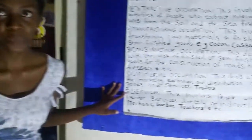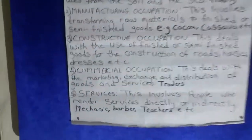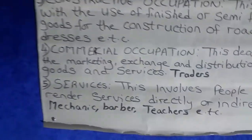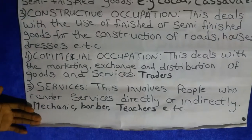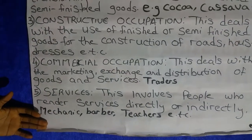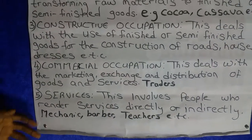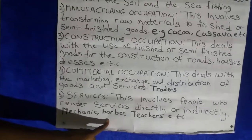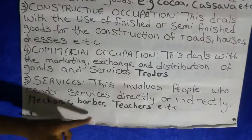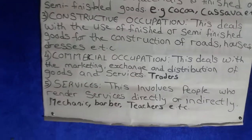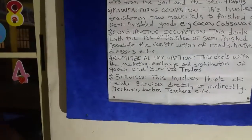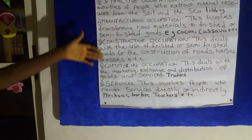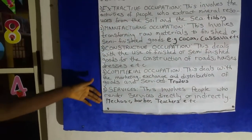Now the last type is services. Some persons don't sell anything — what do they do? For example, mechanics repair your car and you pay them money for it — that's them rendering you services. The barber cuts your hair and you pay him money for it. Teachers teach you and you pay them money. All of these are different occupations that earn you money.